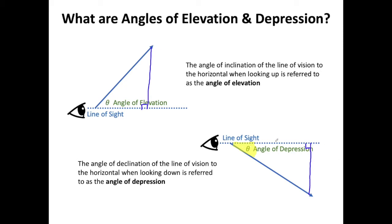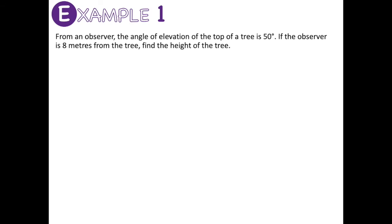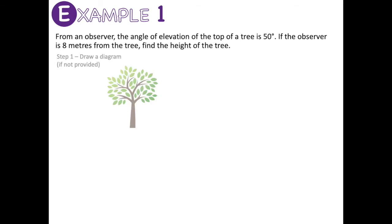In the first example, from an observer, the angle of elevation to the top of a tree is 50 degrees. If the observer is 8 meters from the tree, find the height of the tree. We start by drawing a diagram: we have a tree, our line of sight, and we are looking up to the top of the tree. The angle of elevation is 50 degrees, we are 8 meters from the tree, and we want to find the height h.